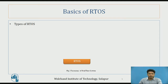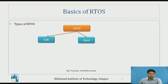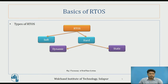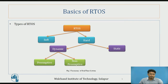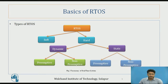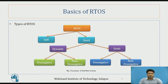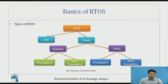Now let's see the different types of RTOS. Under RTOS, we have soft RTOS and hard RTOS. Hard RTOS is further classified into two types: static and dynamic. In hard RTOS, the deadline is fixed — the system must achieve the given task within a specified amount of time, no matter what.